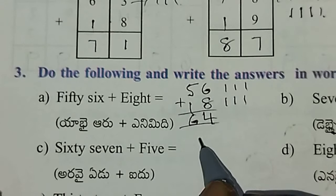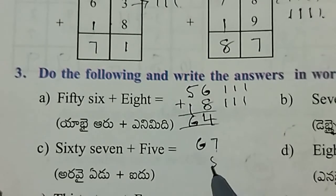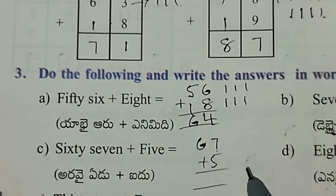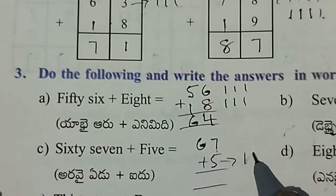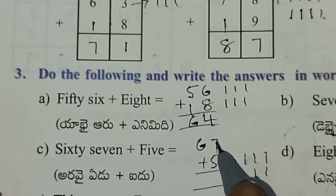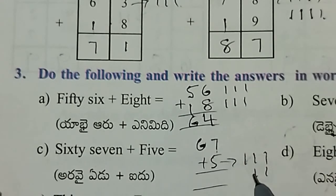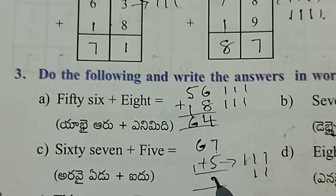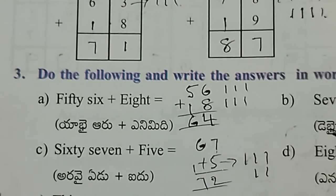Next, 67 plus 5. For 7 plus 5, count: 1, 2, 3, 4, 5. After 7 is 8, 9, 10, 11, 12. So that's 12. Then 6 plus 1 is 7.